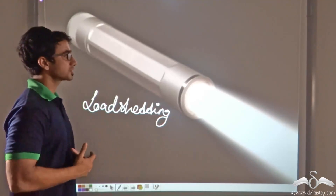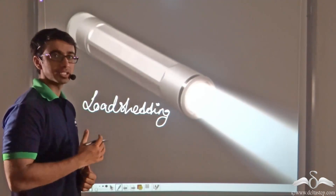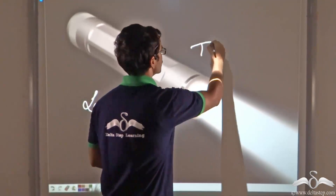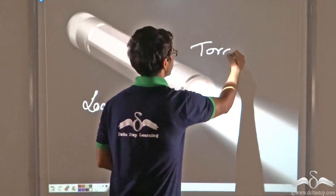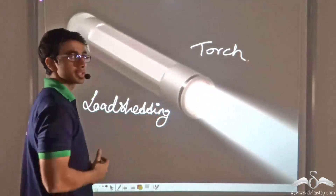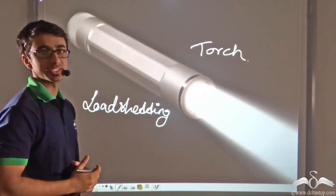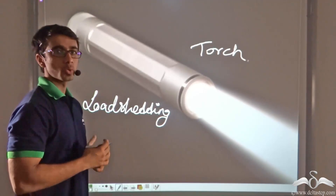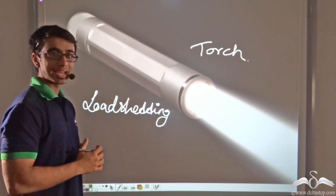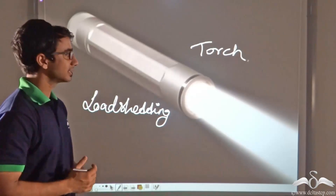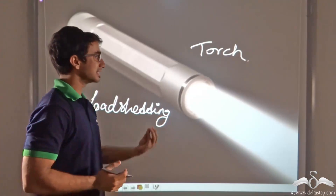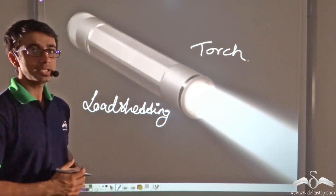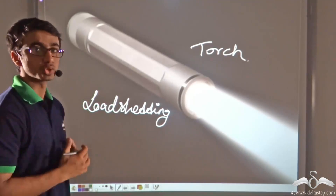Under such circumstances you must have been familiar with the use of a torch. A torch is an instrument that provides us with light whenever there is a failure of electricity. So if there is no electricity all around, where do you think a torch is getting its light from? How is the bulb inside the torch able to provide us with light? We shall find that out very soon.